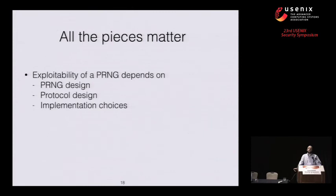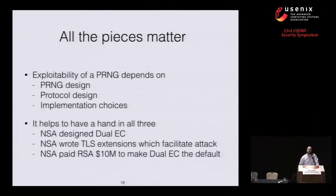The conclusions are that it is possible to exploit a PRNG with a backdoor, but it depends on three things. First, the design of the PRNG: it must have a backdoor, and Dual EC outputs 30 of 32 bytes — fewer bytes would have made the attack much harder, more bytes easier. Second, the protocol design: the attacker must be able to see raw or near-raw PRNG output on the wire. Third, implementation choices have an enormous effect on attack runtime. It's worth noting that it really helps to have a hand in all three aspects: the NSA designed Dual EC, co-authored TLS extensions that put more random bits on the wire making the attack much easier, and paid RSA a large sum to make Dual EC the default generator — thus making the attack possible.